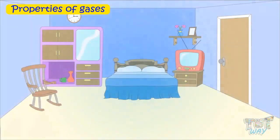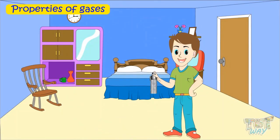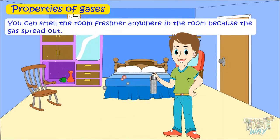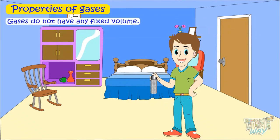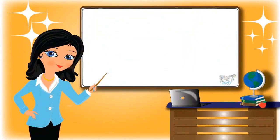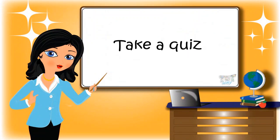Take a bottle of room freshener and spray it in your room — you can smell it anywhere because the gas in the bottle spreads out. Gases do not have any fixed volume; they just spread out. Now you may go ahead and take a quiz to learn more. Bye bye!